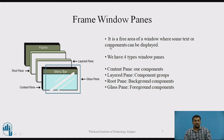In the last video we understood how to create a frame window. A window pane is a free area of a window where text or components can be displayed. There are four types of window pane: the content pane where we usually add our components, the layered pane where we add component groups, the root pane where we add background components, and the glass pane where we add foreground components.